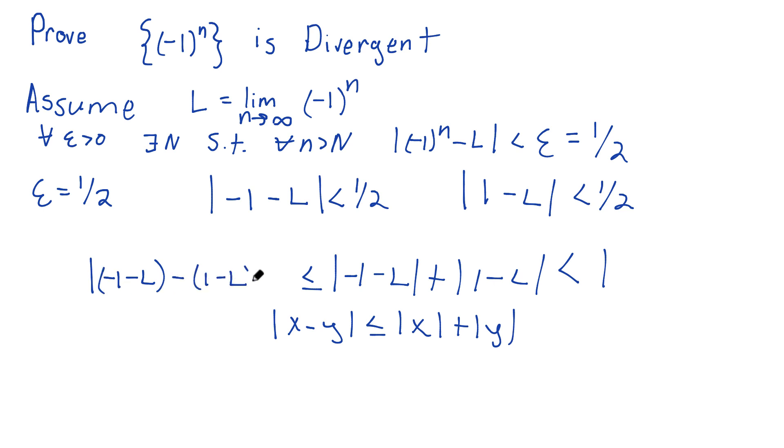And so I'm going to do that. I'm going to say it's this first one minus the second one. And maybe you can see what's going to happen here. Just apply the triangle inequality in reverse here. I'm having negative 1 minus 1, that's going to be negative 2. And the minus L minus minus L is going to cancel.